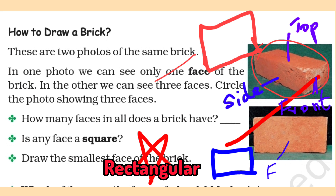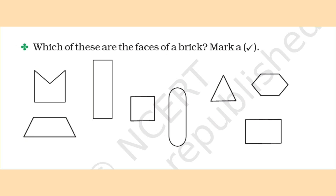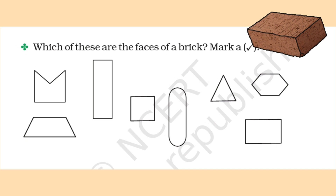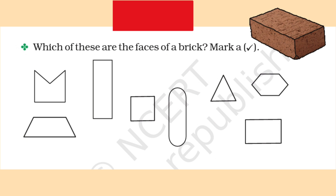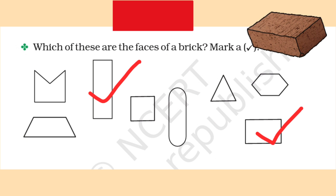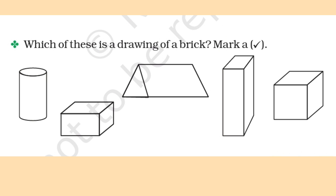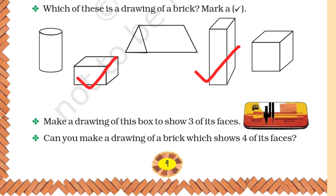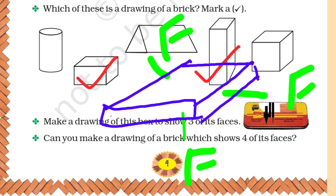Does a brick have a square face? No, the brick has only rectangular faces. The third question: draw the smallest face of the brick. The front face, which has a triangular shape, is the smallest face. Which of these are the faces of a brick? Mark a tick — a brick has a rectangular face, so both rectangle options are correct. Which of these is a drawing of a brick? The second and fourth options both have rectangular faces. Make a drawing of a box to show three of its faces: the top face, the front face, and the side face. Can you show four faces in a drawing? No — in a drawing we can only see three faces of a brick.